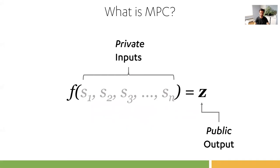For those of you who do not know, MPC, or secure multi-party computation, is a subfield of cryptography which allows you to compute a function on private inputs without revealing those inputs. You can really perform any computation, and there's no guarantee that your public output has no inference to your private inputs.